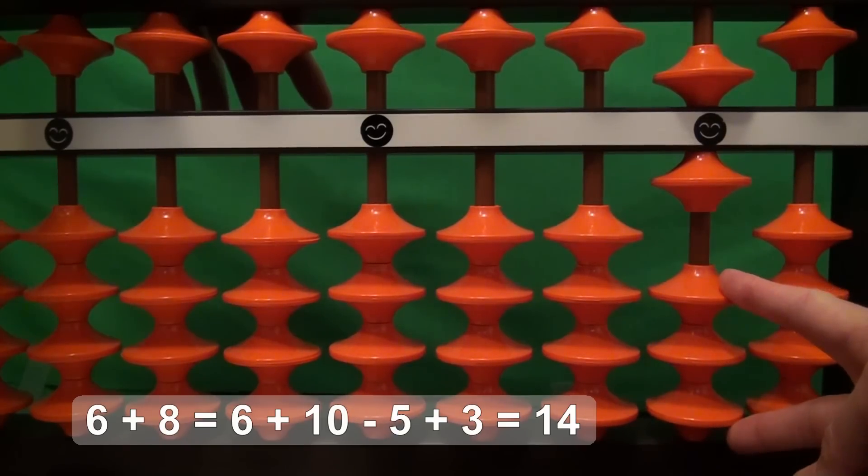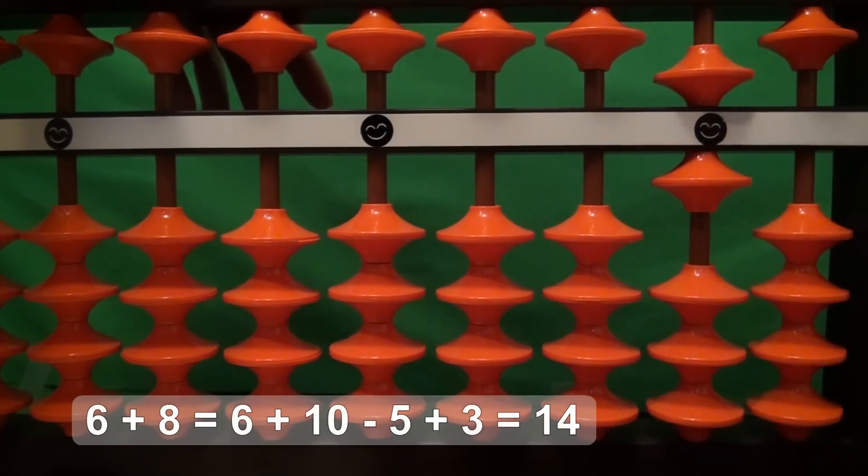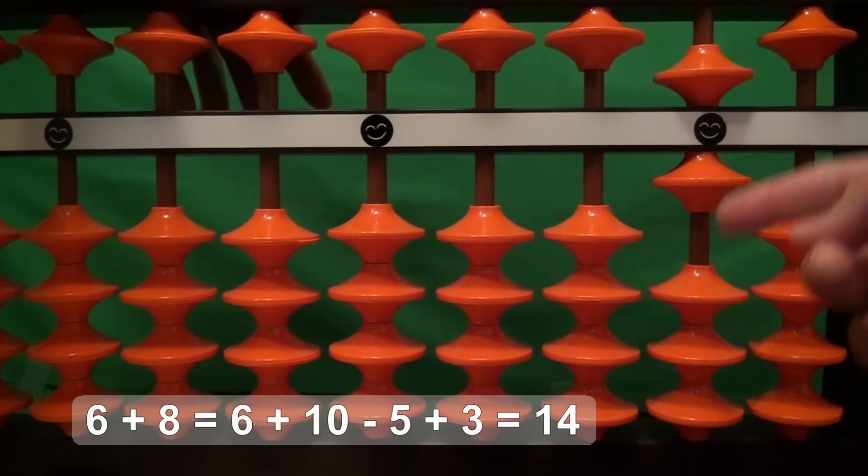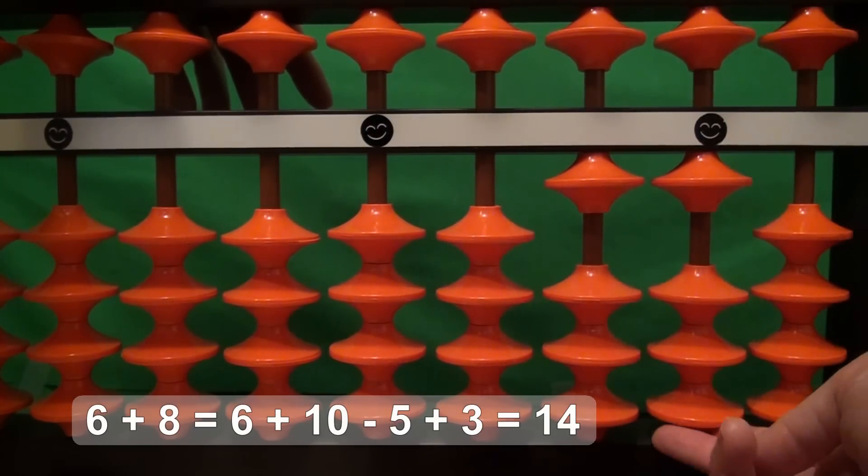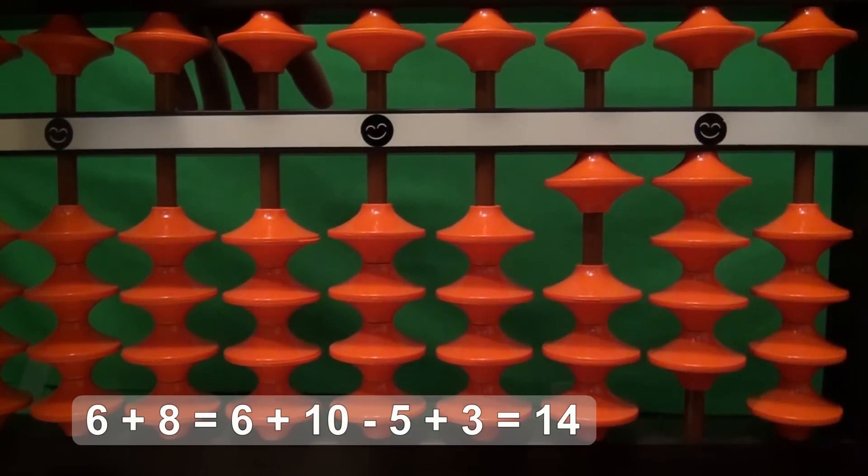We have 3 beads down here, but we don't have any extra 5 beads. So again, we add the 5 by adding 10 and taking away 5. We've added 5, and then we need 3 more for the 8. So 6 plus 8 equals 14.